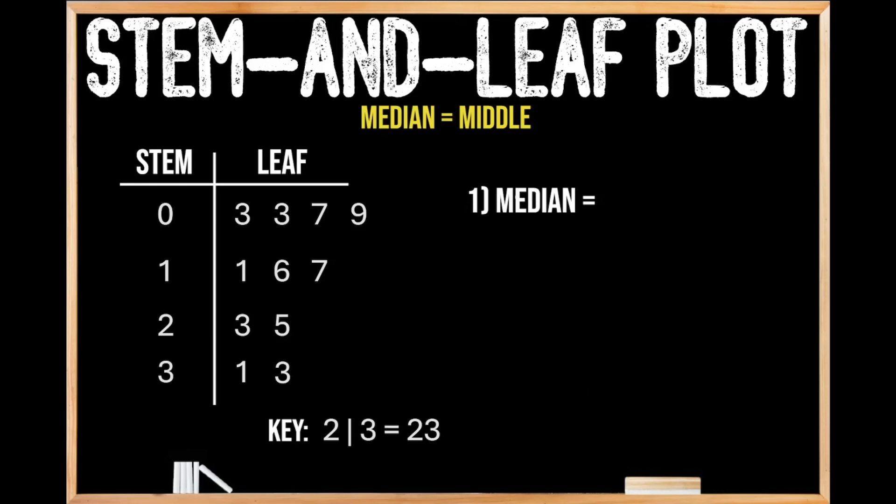And just a little reminder, up top highlighted in yellow, the median value is going to be the middle value of a data set when it's ordered from least to greatest.